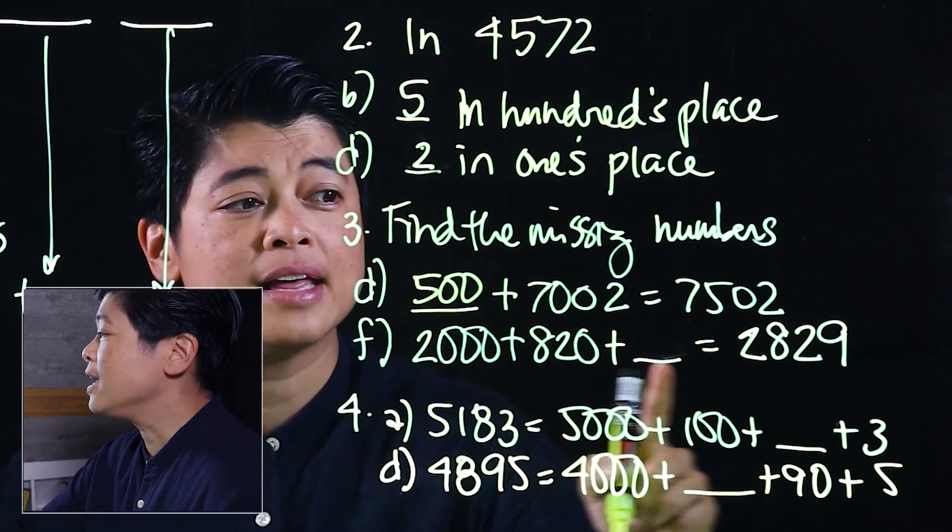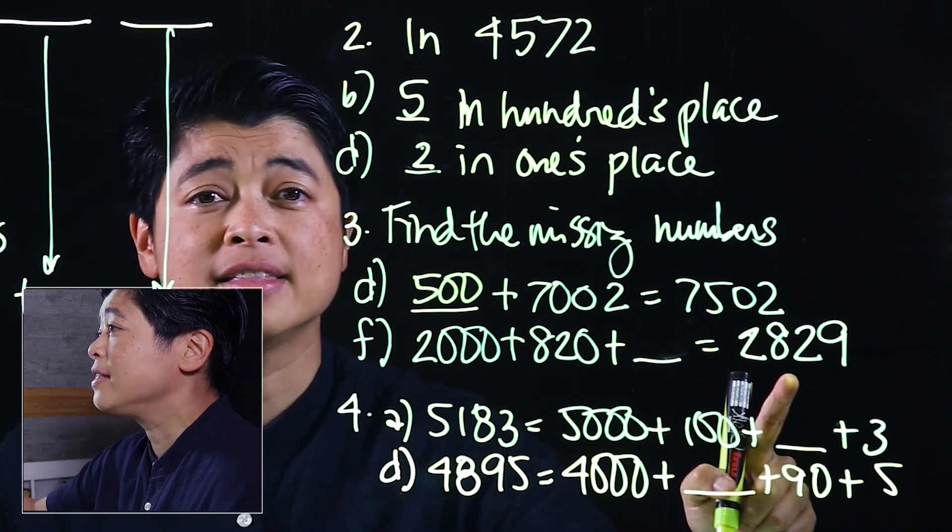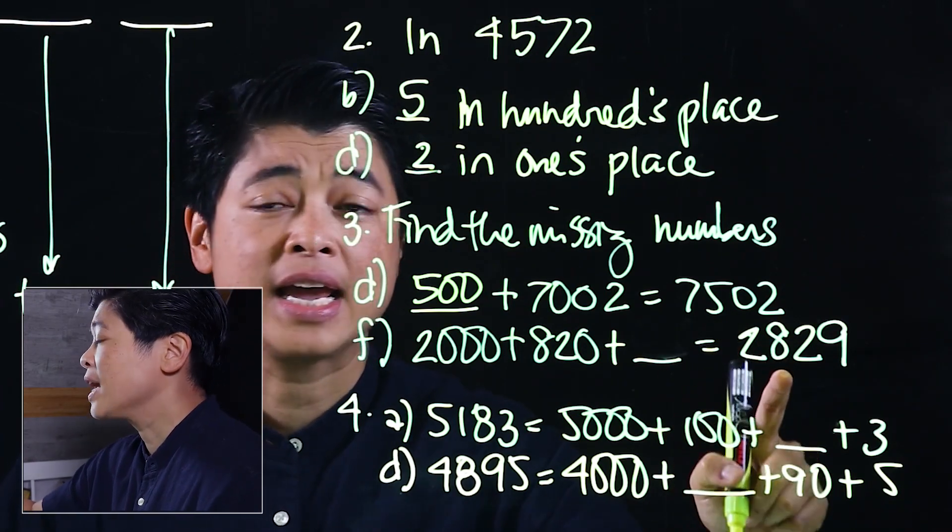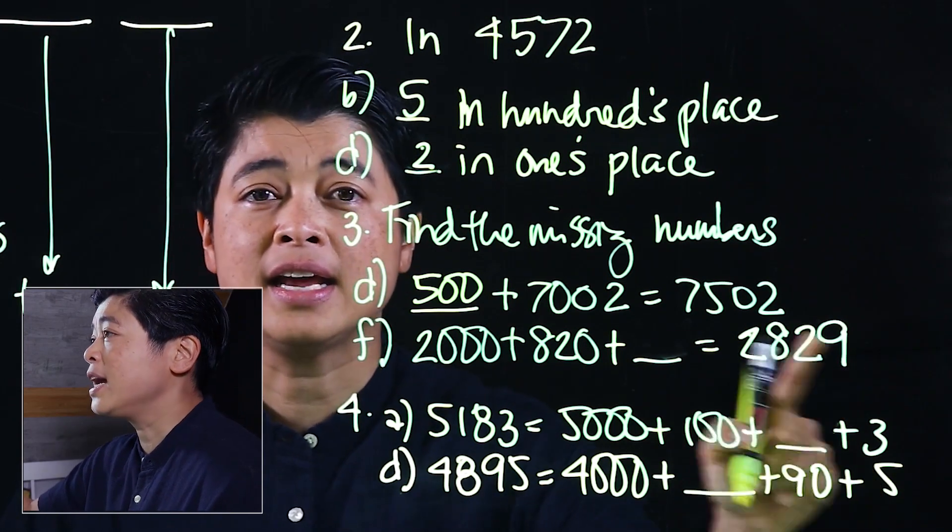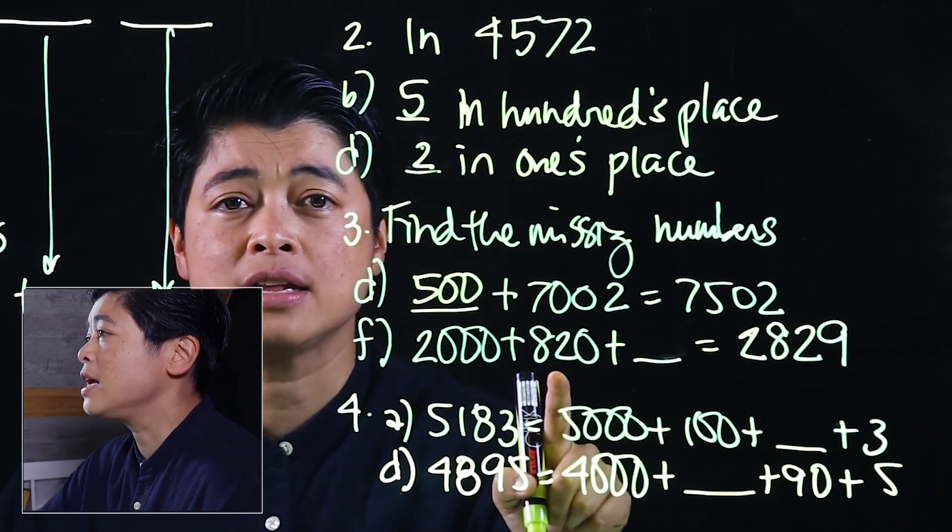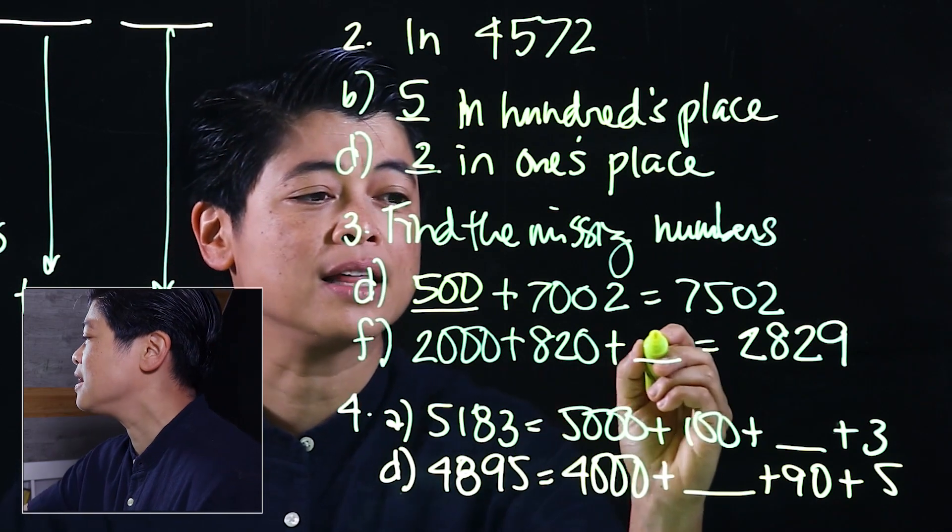Similarly in this case, we start here on the right, this is 2,829. If we have 2,829 and we have the 2,000 and the 820, we're missing the 9.